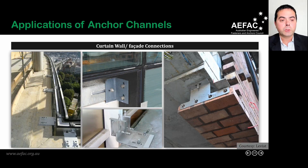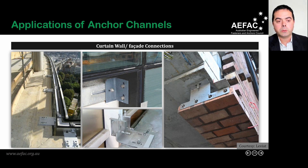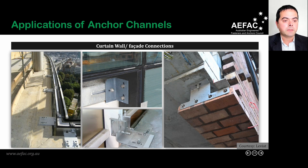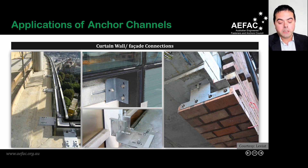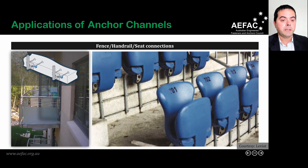The most common application of anchor channels is connecting curtain wall or facade to a slab or concrete building. In these cases the anchor channel is typically installed parallel and close to the edge. Another common application is connecting handrails or fence-type elements — for example, a balcony connected to a building. Anchor channels are also used to connect seats in stadiums, where the groove in the slab contains the anchor channel and seats are connected via channel bolts.